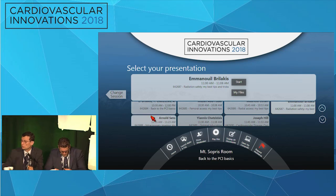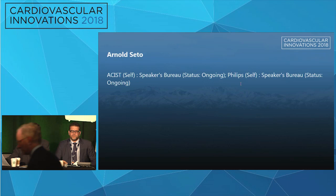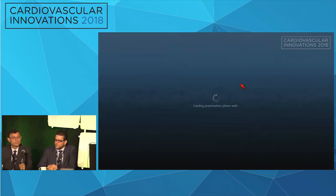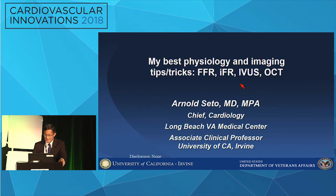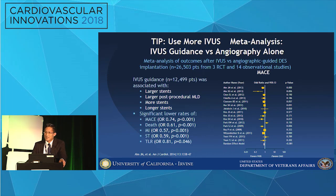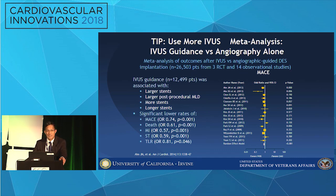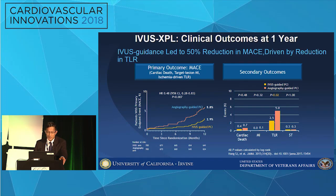Our next speaker is Arnold Sito, who's going to talk about imaging, my best tips and tricks. Good afternoon. I revised these slides because I thought the major confusion is on the physiology side, so I emphasized more physiology and less imaging. The quick key about imaging is that we should probably use it more. Only about 10 to 15 percent of our PCIs have intravascular imaging — IVUS done. The data, even in the drug-eluting stent era, suggests there's at least some benefit in terms of reducing MACE by up to 25 percent: death, MI, target lesion revascularization. This is from 14 observational and three randomized trials.